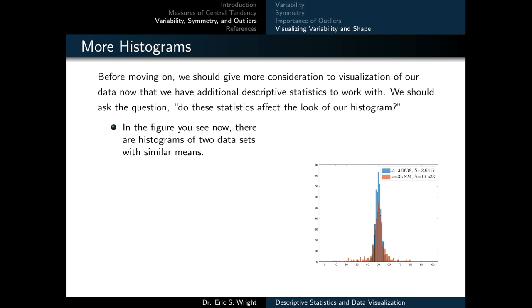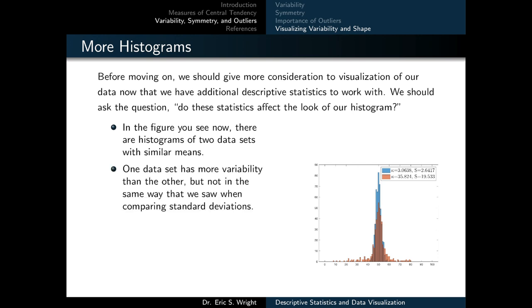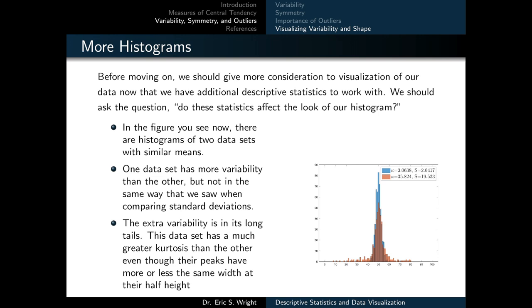Now that we've addressed how variability and symmetry affect a histogram, we can consider the importance of outliers and how kurtosis plays a role. In the figure shown now, there are two datasets with similar means, but one has more variability in its long tails — it has a much greater kurtosis than the other, even though their peaks have more or less the same width at half height. If we visually compare two datasets with all other things equal but one has greater kurtosis, the dataset with greater kurtosis will have comparatively longer and fatter tails, exemplified by the orange histogram in our figure.